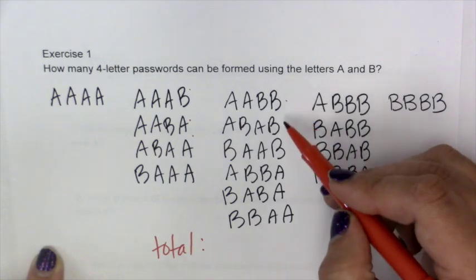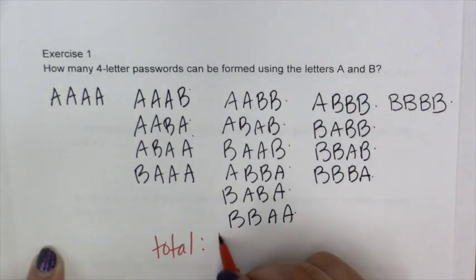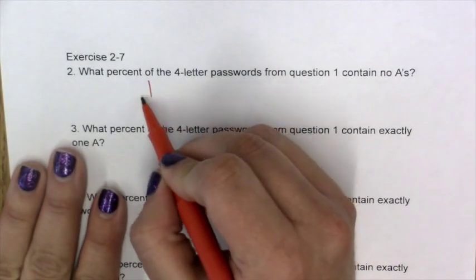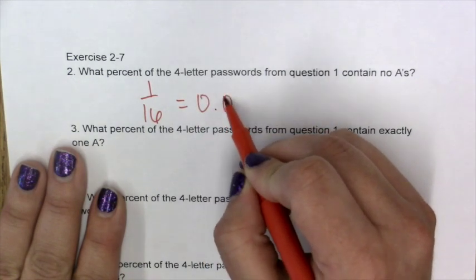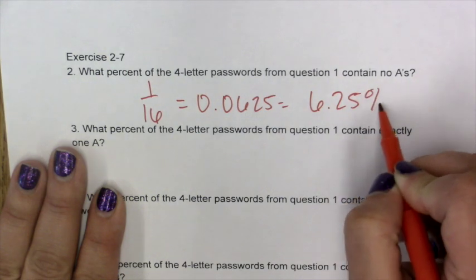1, 2, 3, 4, 5, 6, 7, 8, 9, 10, 11, 12, 13, 14, 15, 16. So it would be 1 out of 16, which when we divide is 0.0625, which is 6.25%.